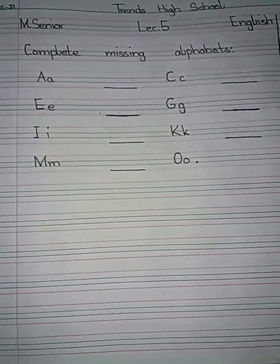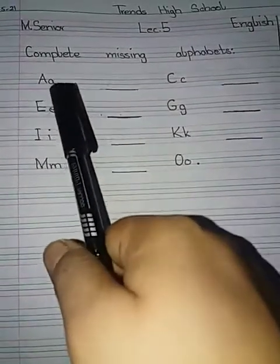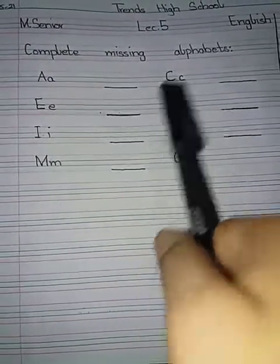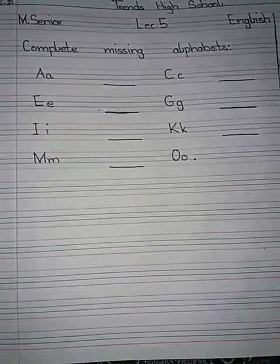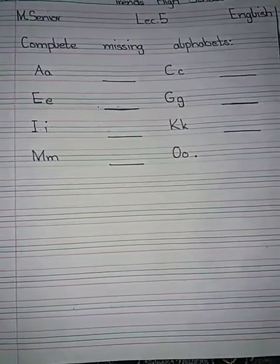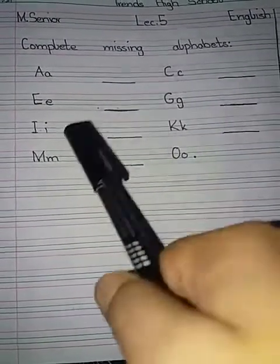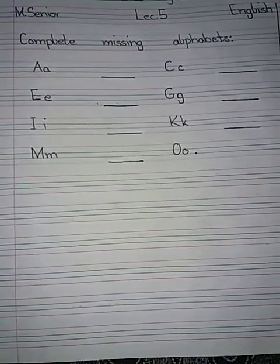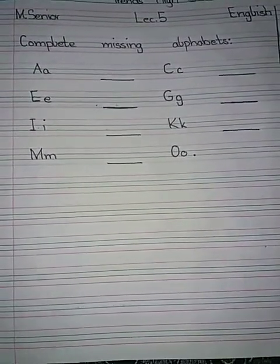Complete missing alphabets. Some alphabets are already written for you. Okay? You have blank spaces. What you have to do is start reading alphabets from A, and all the blank spaces you need to fill in. Wherever alphabets are missing, you have to complete them.